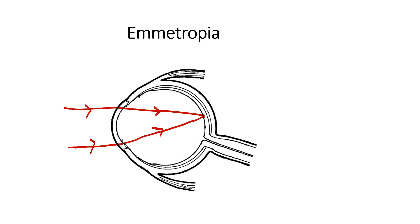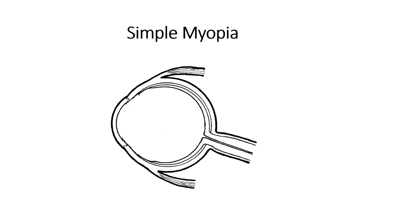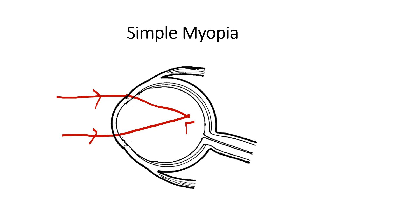Let us begin with simple myopia. Simple myopia means that rays of light coming from a distant object — that is, parallel rays of light — after passing through the ocular refractive media are brought to focus at a point in front of the retina. The rays of light are actually being bent more than what is necessary; in other words, this eyeball has more power than it needs, and the rays are brought to focus in front of the retina.